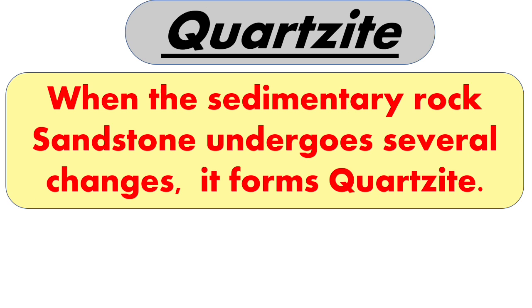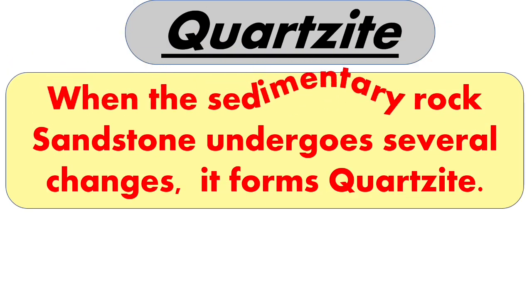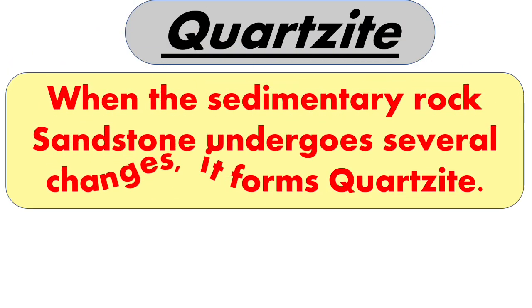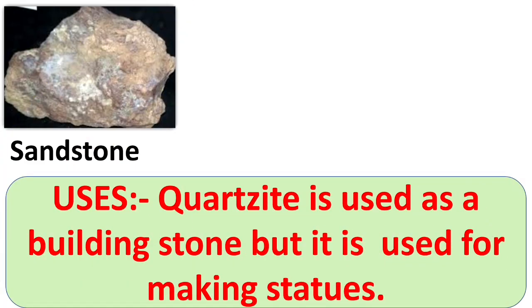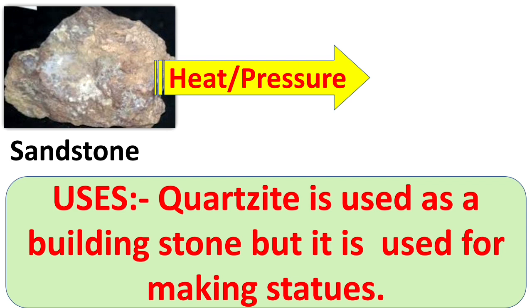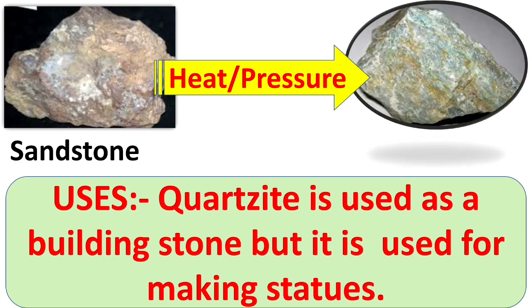Next is quartzite. When the sedimentary rock sandstone undergoes several changes, it forms quartzite. It is a hard rock and can even scratch steel. Here you can see this is sandstone — when it gets tremendous heat and pressure it changes into quartzite. Quartzite is used as a building stone and also for making statues.